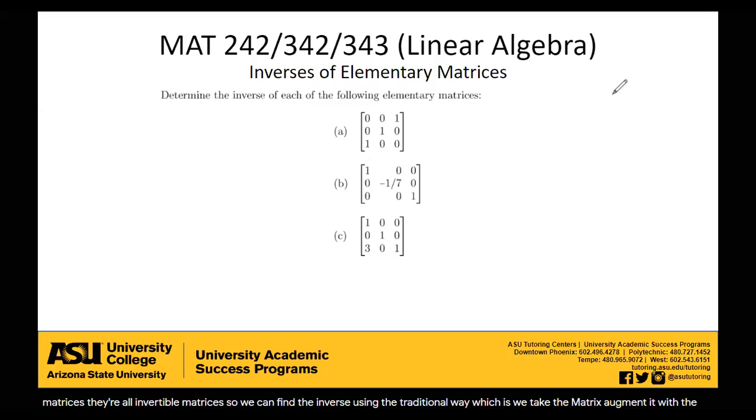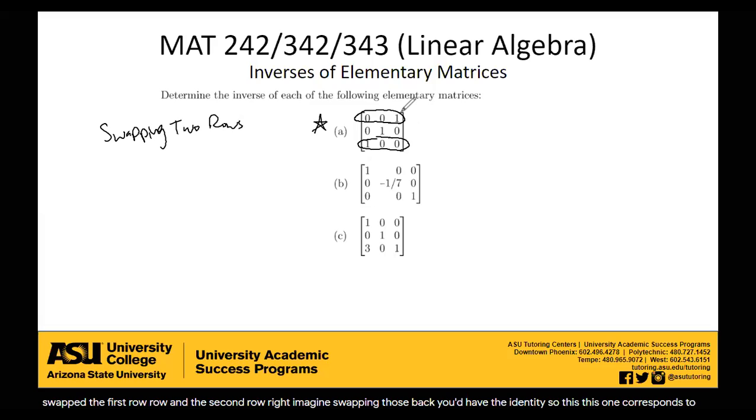So let's start at example A. So this is the identity matrix, right, but let's see what's so different about it. It's not exactly the identity. What have we done? We've swapped the first row and the second row, right? Imagine swapping those back, you'd have the identity. So this one corresponds to swapping two rows.